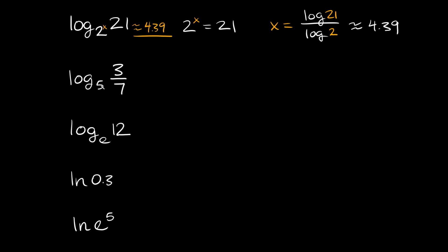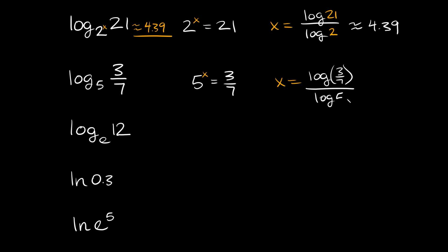Same thing over here: log base 5 of 3 sevenths. There's no clear way of solving this by hand, so use a calculator. To solve for the exponent, x equals the log of the big number — log of 3 sevenths — divided by the log of the little number, log of 5. You'll get that this is approximately negative 0.526. So log base 5 of 3 sevenths is approximately negative 0.526.